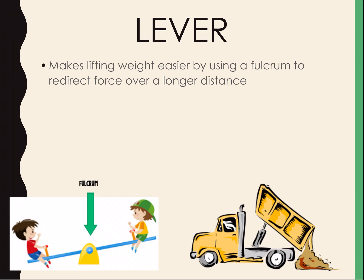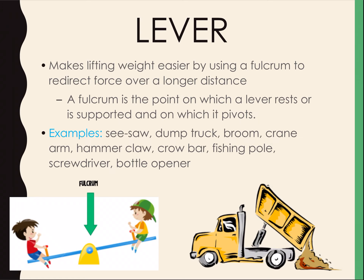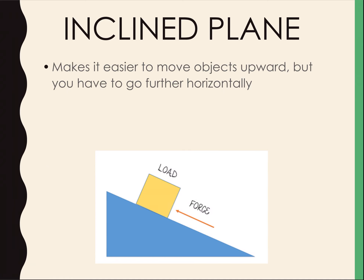Then we have the lever. A lever makes lifting weight easier by using a fulcrum. If you look at the seesaw picture, that little middle piece is the fulcrum — the point on which the lever rests or is supported and helps pivot. That's what helps make you go up and down on a seesaw. Another example is a dump truck, where the fulcrum helps make the bed of the truck able to dump its load.